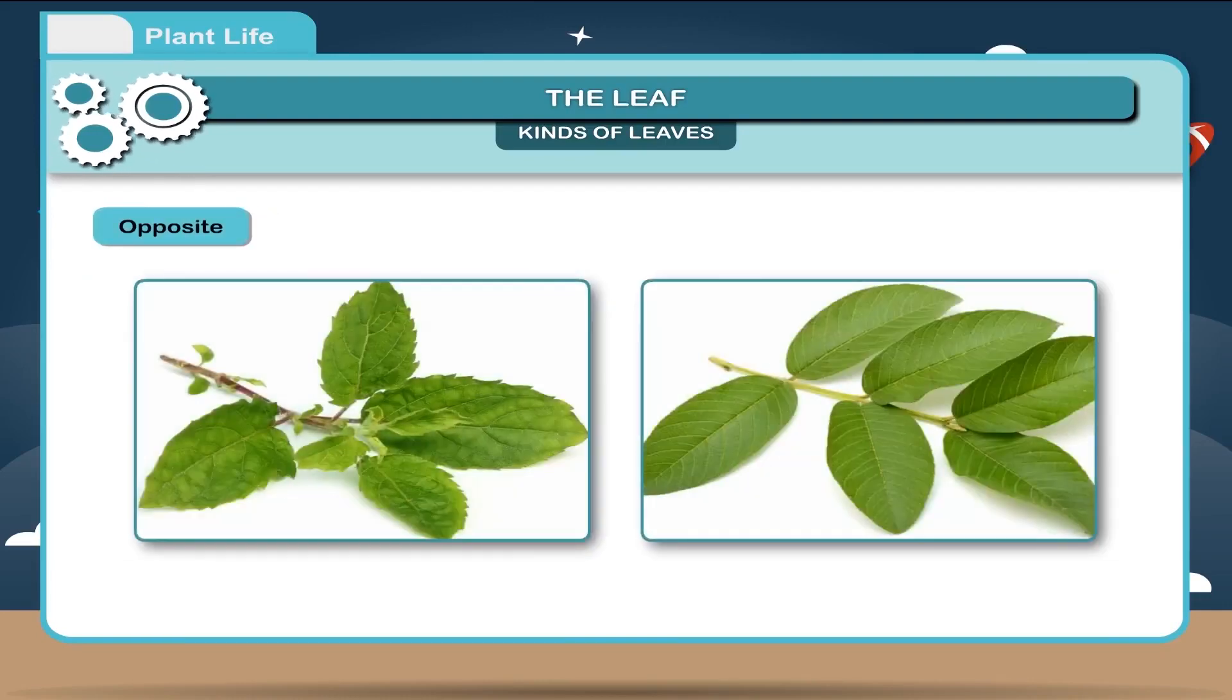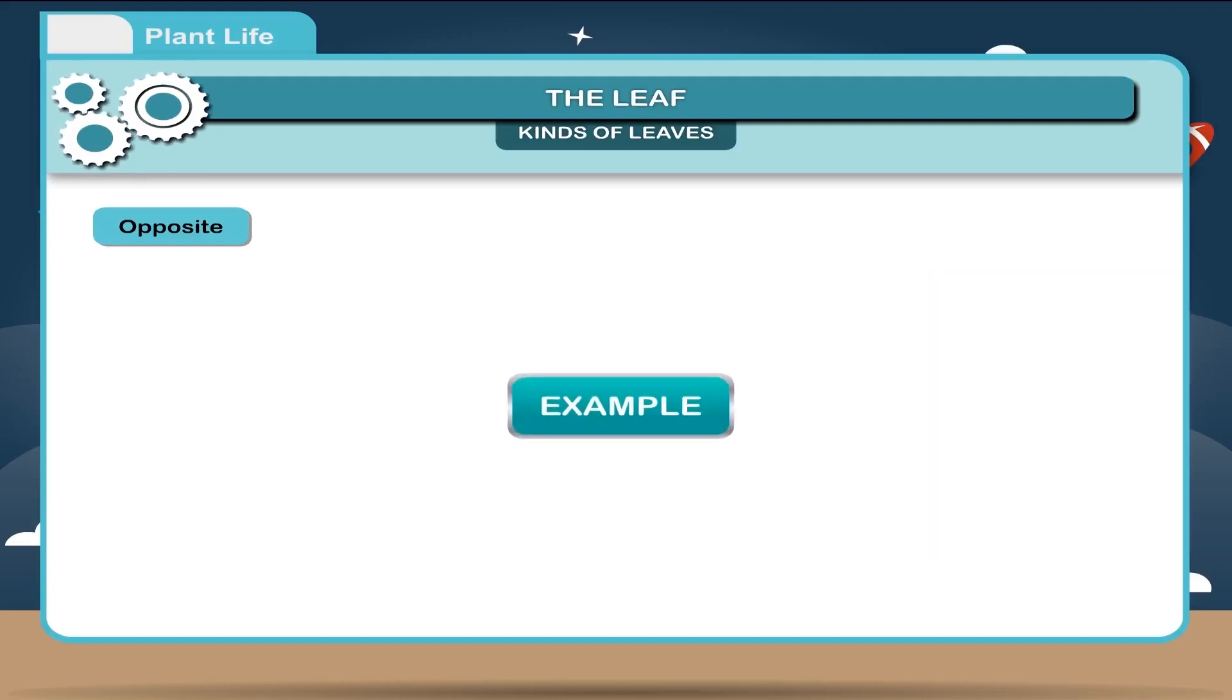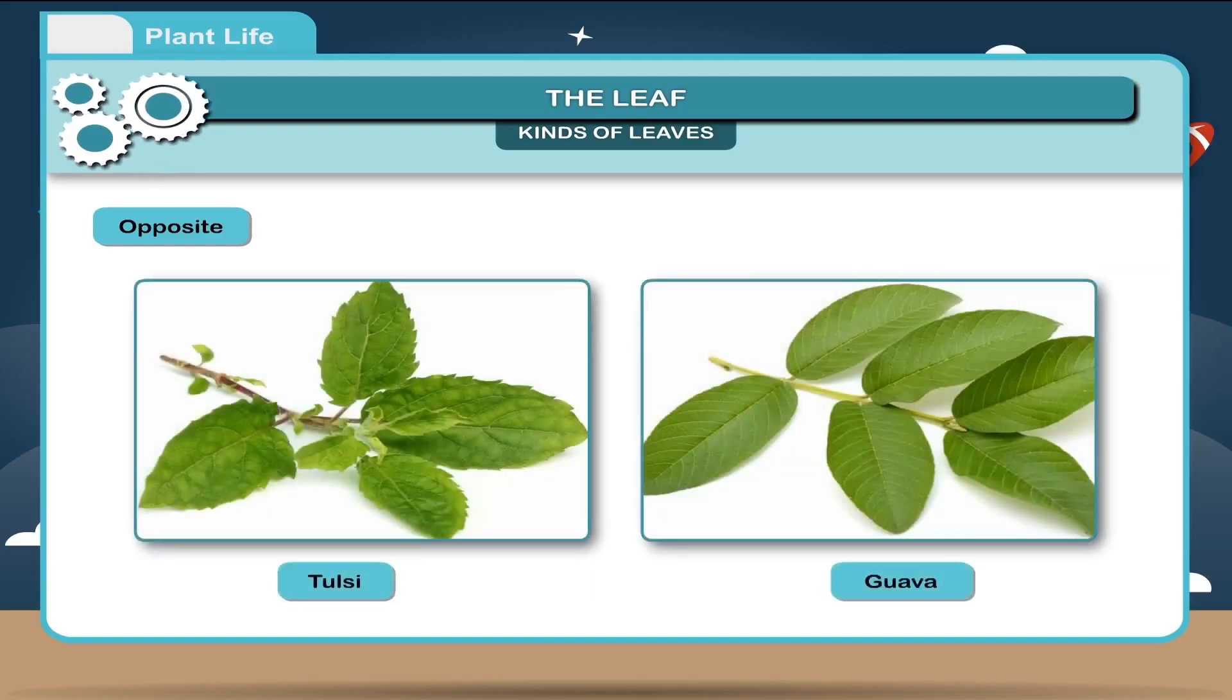Opposite: when two leaves develop at a node lying opposite to each other. Example: tulsi, guava.